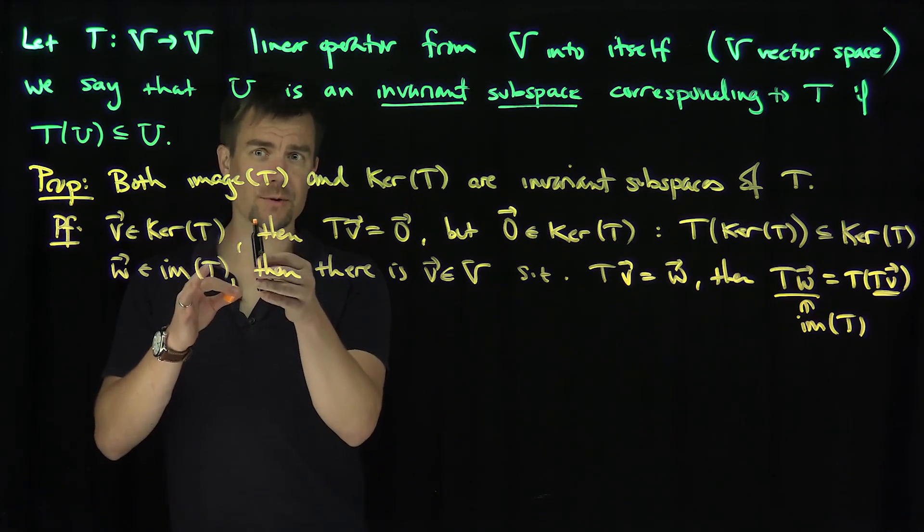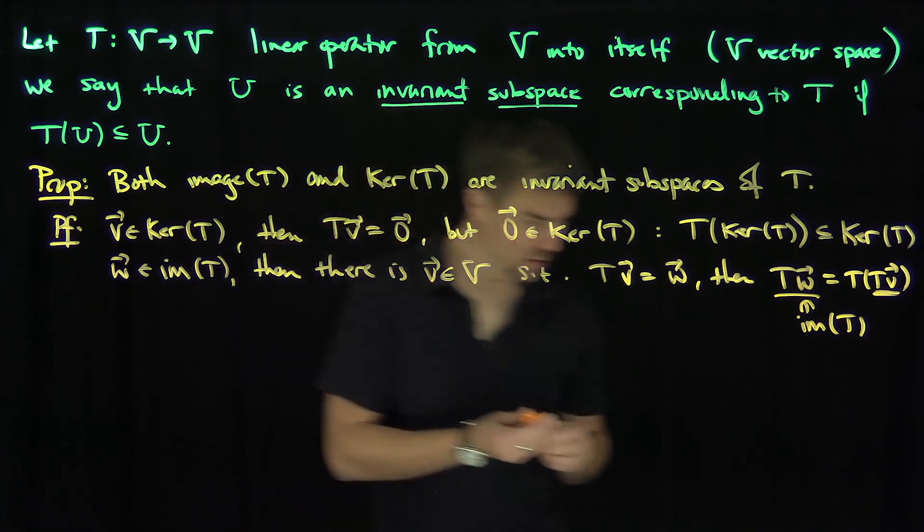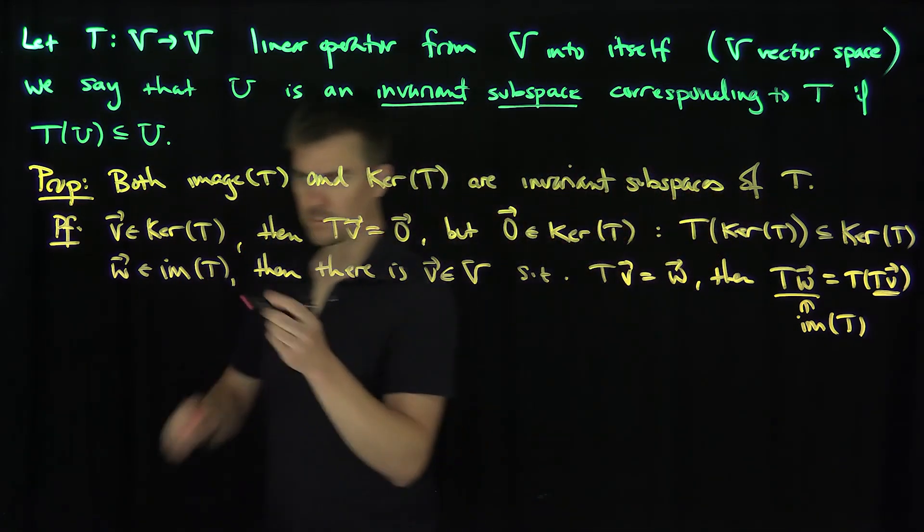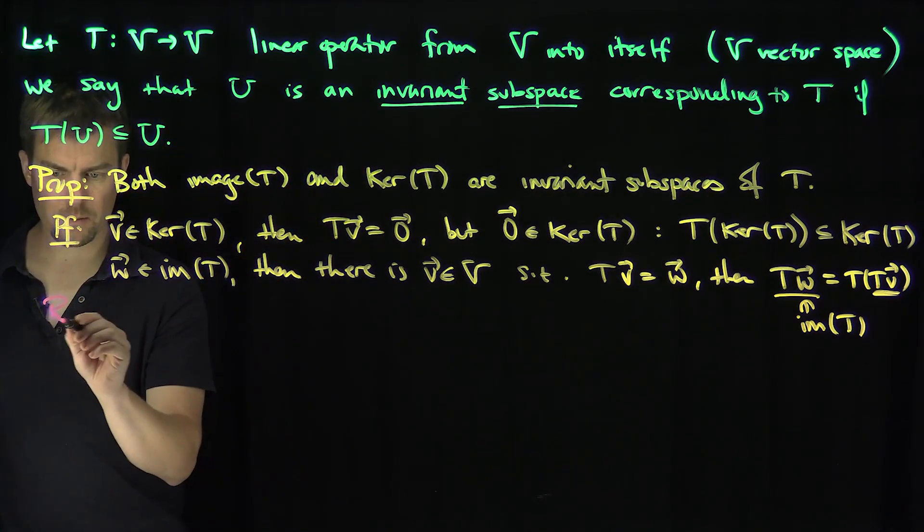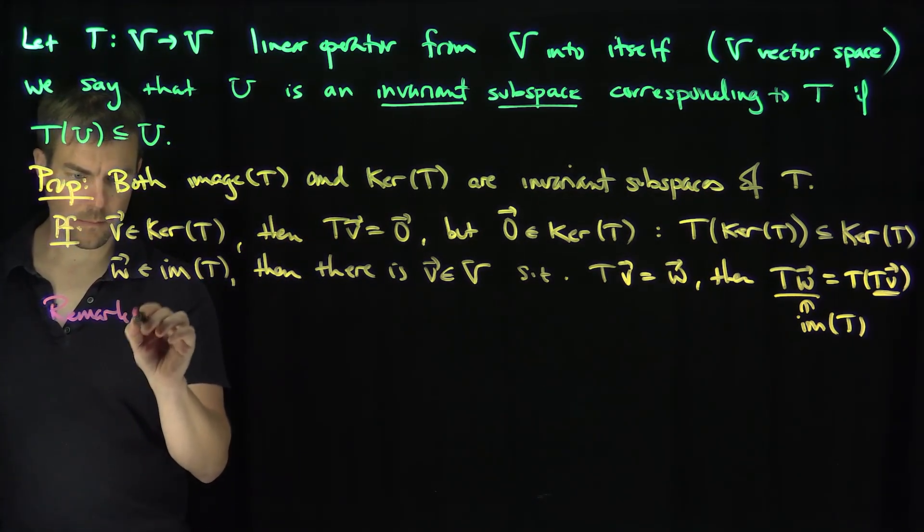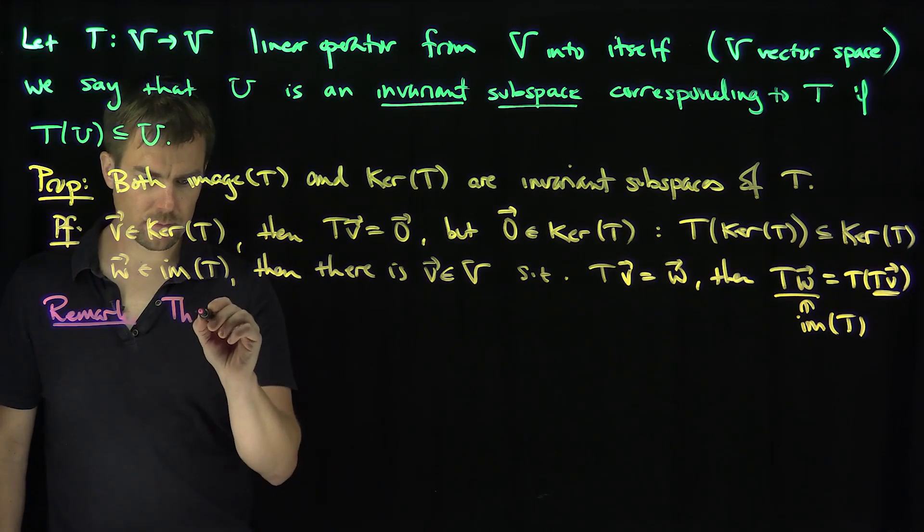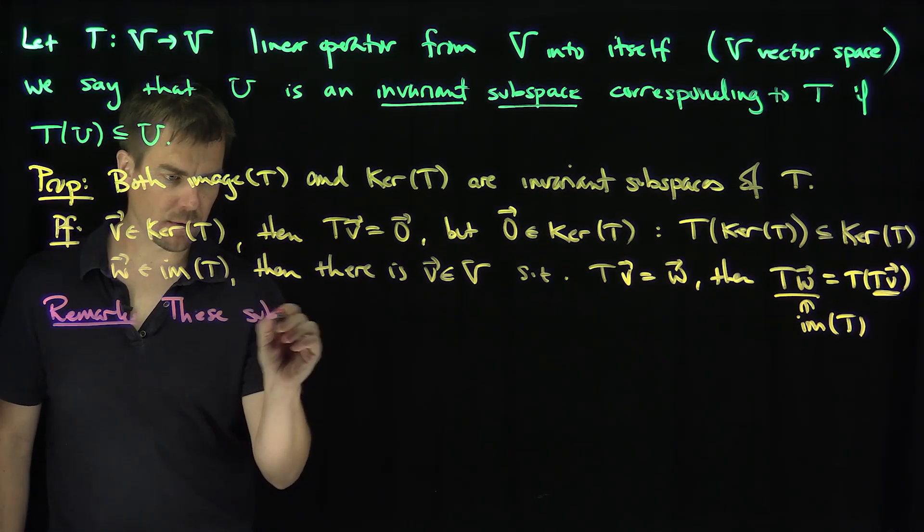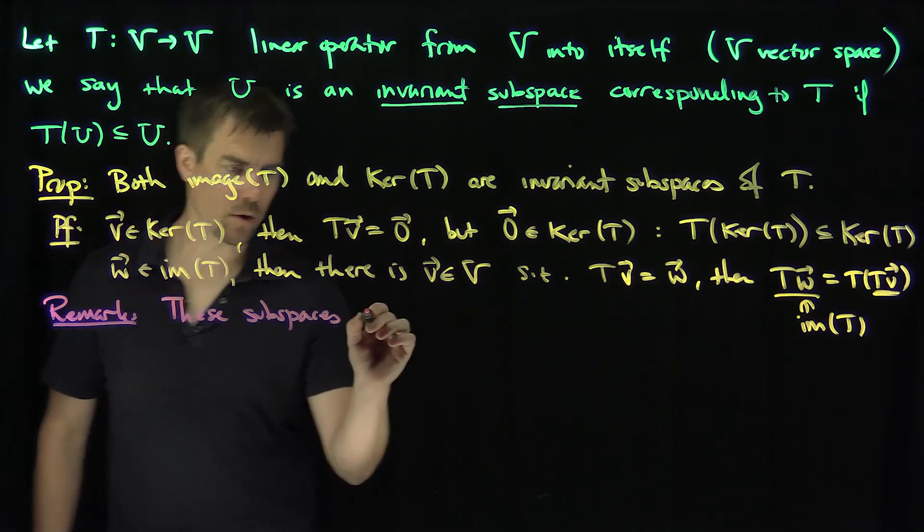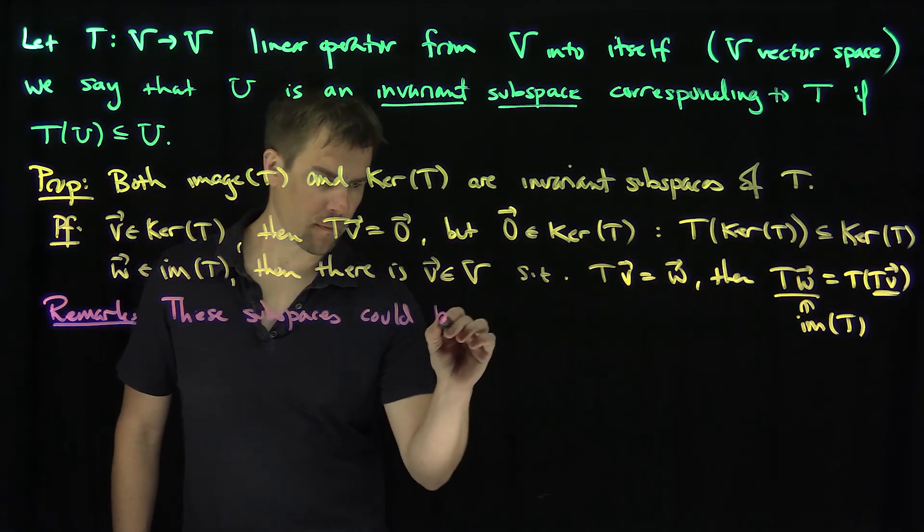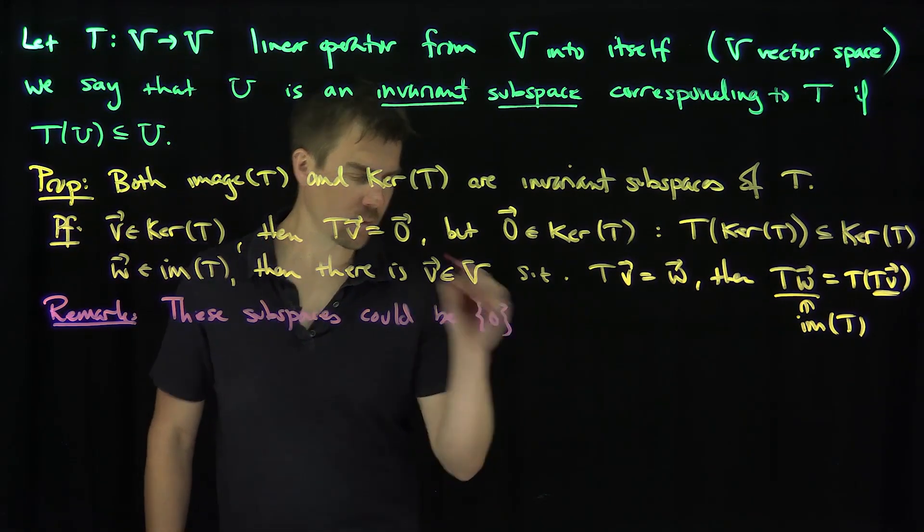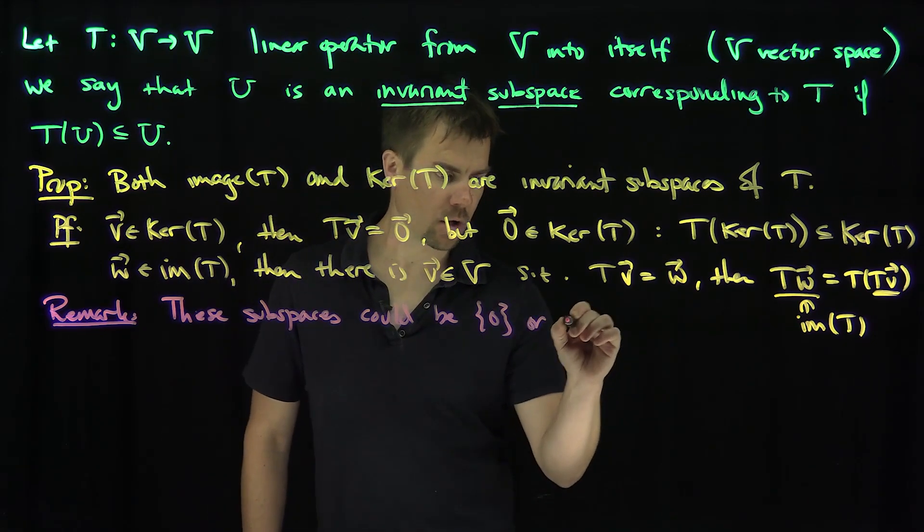The question becomes, it's possible though that these things could be just the zero subspace or the whole space themselves. So as a remark, these subspaces could be either empty or all of V.